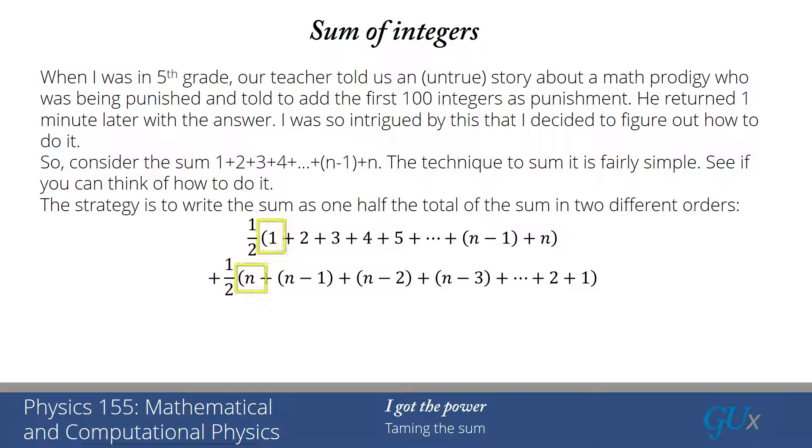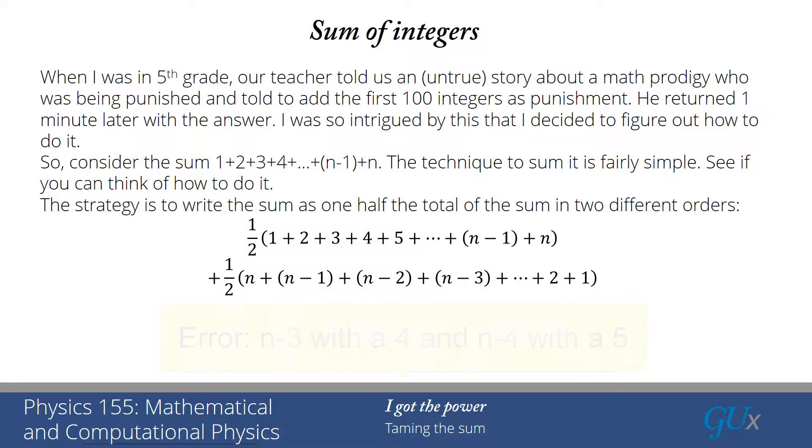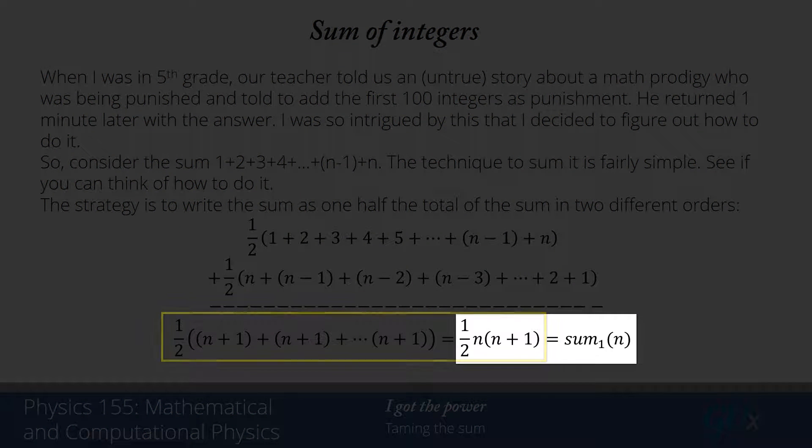Now you see if I pair the first entries I have an n with a one, then n minus one with a two, then n minus two with a three and so forth. All of those terms add up to n plus one and if I count how many of those terms do I have, I have n of them. So I sum all of those n plus one terms and I get one half n times n plus one which equals the sum of the first power of all integers, which we call sum subscript one for first power of n.